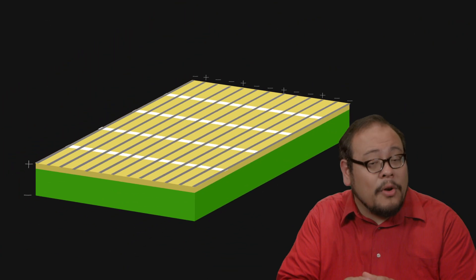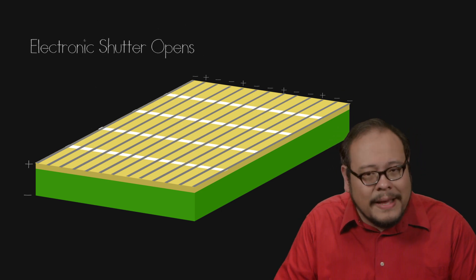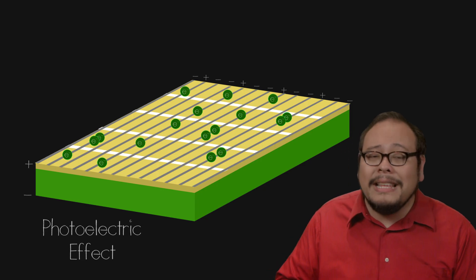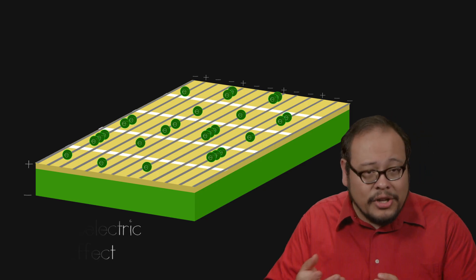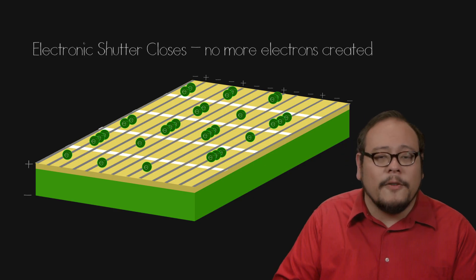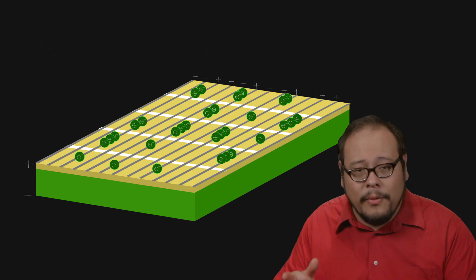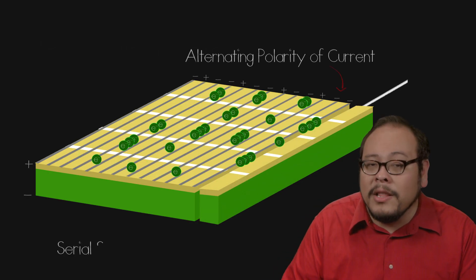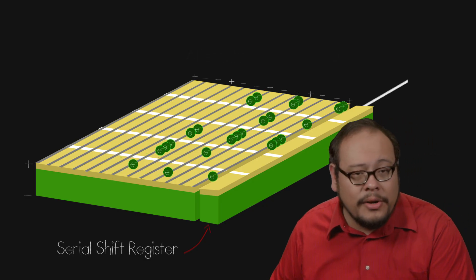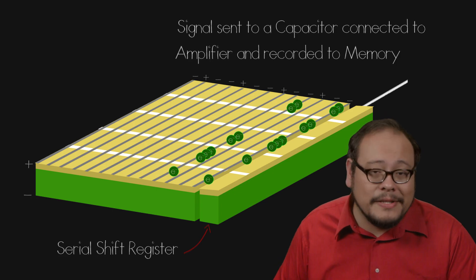Electronic shutter on the camera opens, letting light onto the sensor. The photoelectric effect creates electrons that migrate to the top of the silicon slab where now confined by the channel stops and charged aluminum strips. The shutter closes and the sensor holds the charge from the exposure. Now that charge is shifted row by row by alternating the current along those thin aluminum strips and sent off onto a serial shift register which is then set out to a capacitor connected to an amplifier and recorded onto the camera's memory.